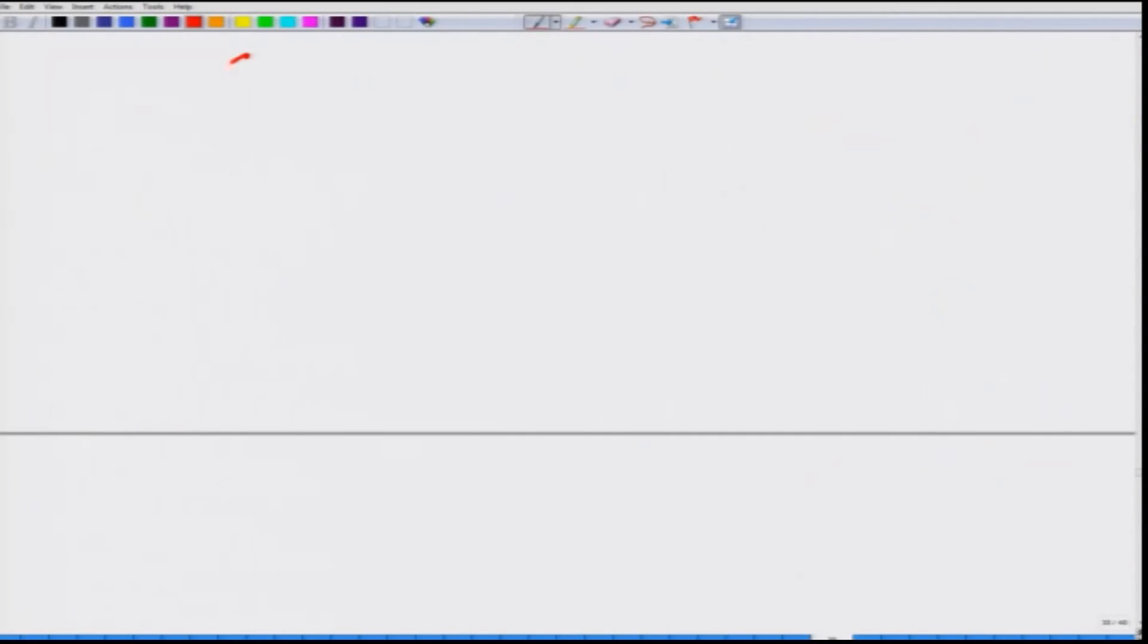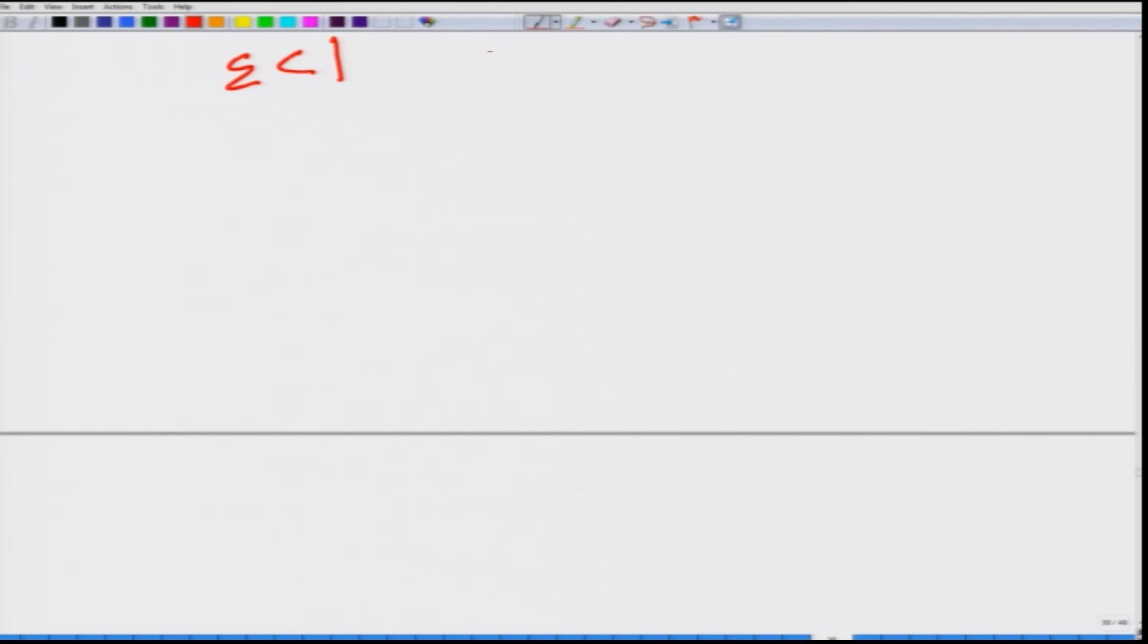Third case, let us look at when epsilon happens to be less than 1. What will happen to 1 by epsilon? It would be greater than 1, and as it is greater than 1, 1 minus 1 by epsilon, it has to be greater than 1. This will become less than 0 and so MR is less than 0. What happens here is that if the monopolist increases the price, if the monopolist increases. So this is the relationship between price elasticity of demand and the monopolist's revenue. Thank you.